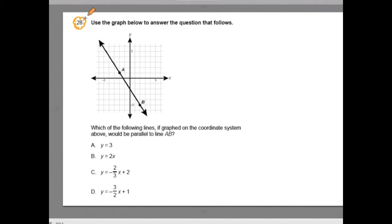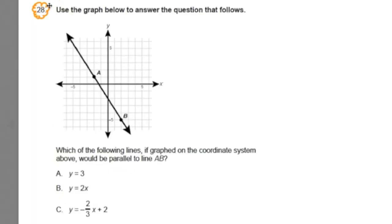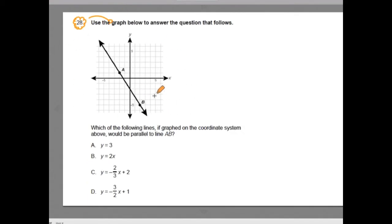So let's start by reading this one over and working through some of the math. For number 28 it says, use the graph below to answer the question that follows. We're given a graph, and then it says, which of the following lines, if graphed on the coordinate system above would be parallel to line AB. We've seen this before, this coordinate plane system. We have our x, x is our input, y is our output, the vertical axis.